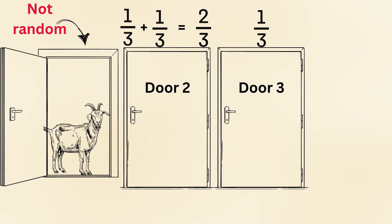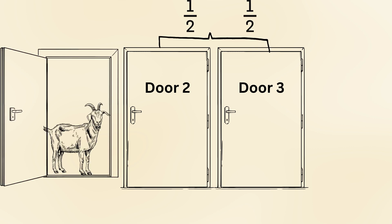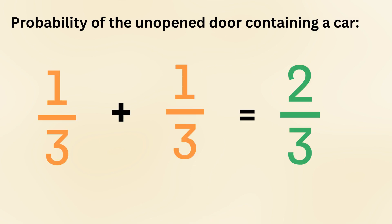The host's reveal is not random. It is a deliberate act that shifts the odds in favor of switching. The counterintuitive part is that your intuition tells you that after one door is opened, there are only two doors left, so it should be a 50-50 shot. However, because the host's action is based on prior knowledge, the probability remains skewed.